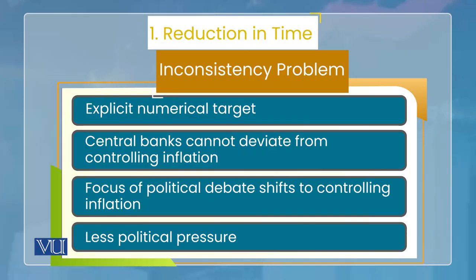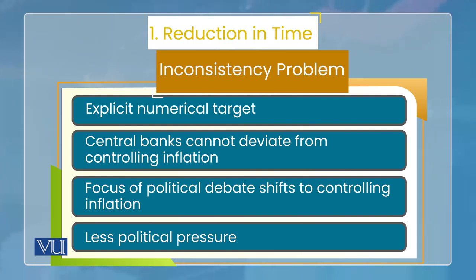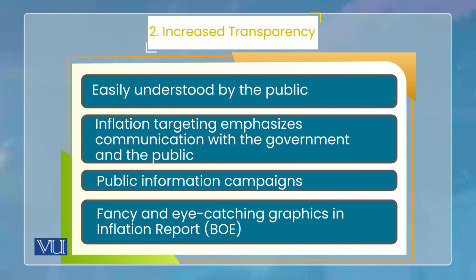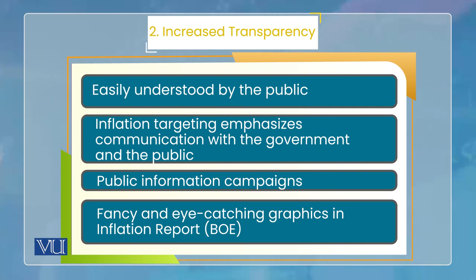Because people can easily see whether the target has been achieved, the central bank will be held accountable. This also reduces political pressure — the pressure to loosen monetary policy in an election year or for any other reason. There is now a numerical target that must be achieved, and this is how the time inconsistency problem is solved.